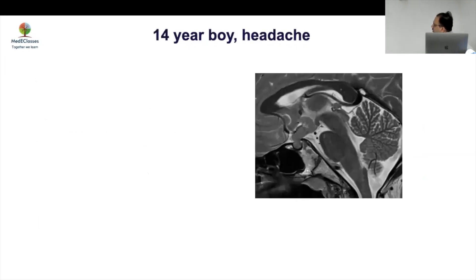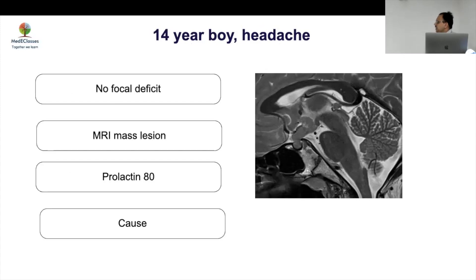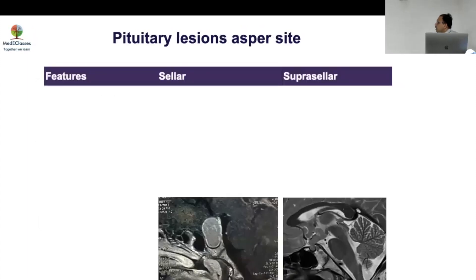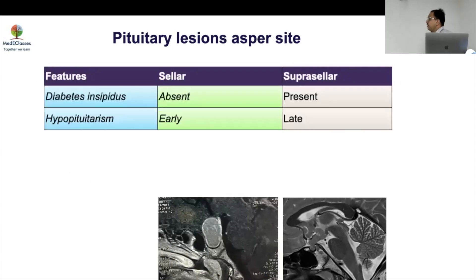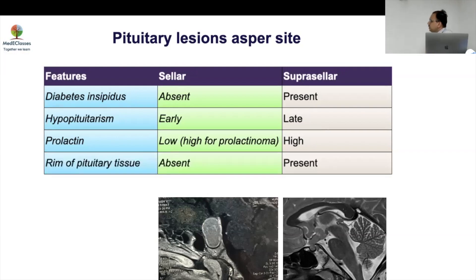Case 6: A 14-year-old boy with headache. MRI shows suprasellar extension coming into the sella — suprasellar mass descending to the sella. No focal deficits; prolactin is 80. High prolactin suggests a suprasellar mass. Pituitary lesions can be distinguished by site and workup: diabetes insipidus, later onset of multiple pituitary hormone deficiency, and high prolactin suggest a suprasellar mass, whereas no DI and low prolactin suggest an intrasellar lesion. A rim of normal tissue helps distinguish craniopharyngioma from a pituitary macroadenoma.